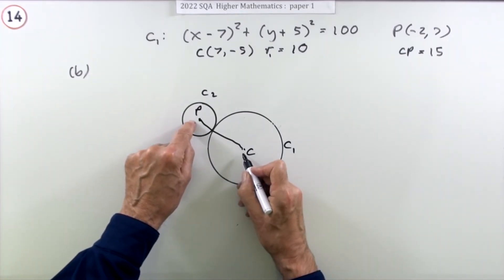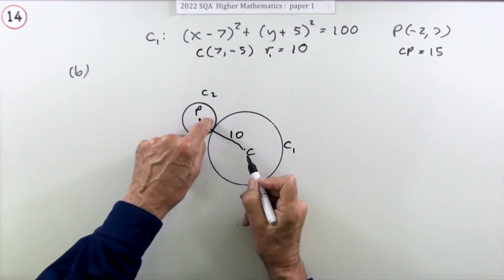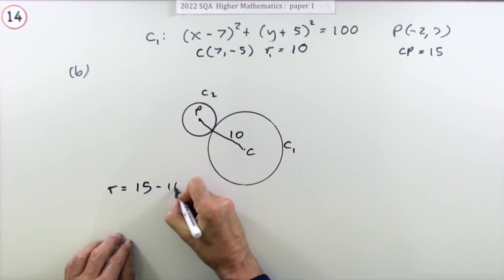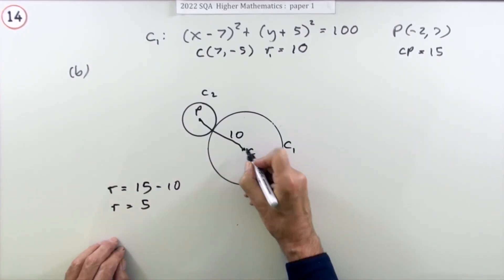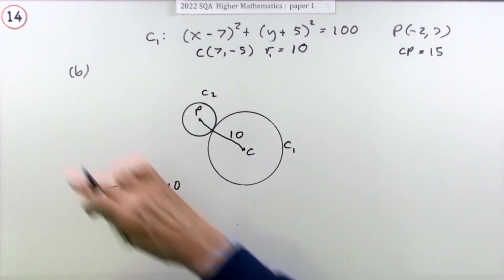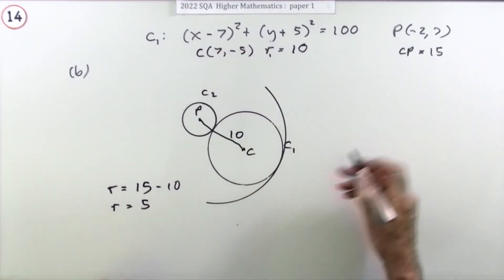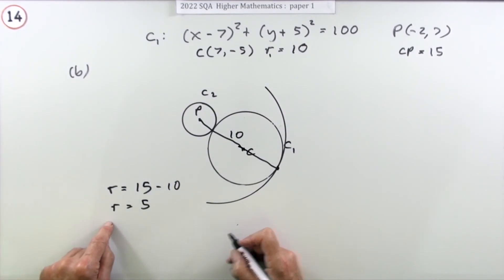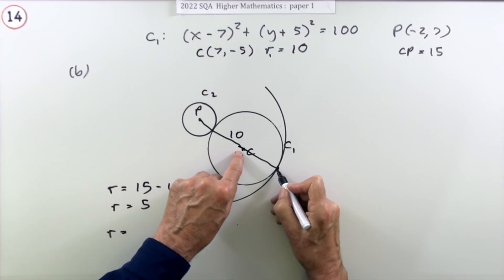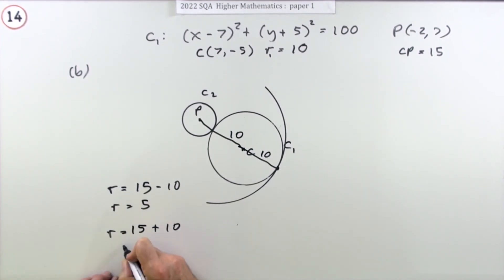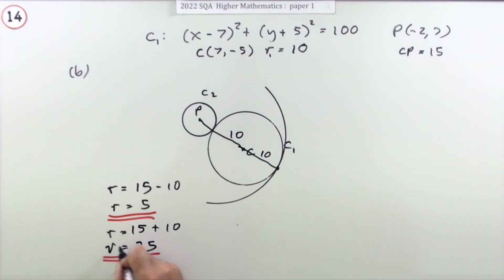You know the distance between centres is 15 and C1's radius is 10. One possible value of R is 15 minus 10, so R = 5 — the small circle just touches C1 externally from the inside. But C2 could also expand to envelop C1 entirely and touch it on the far side, in which case R = 15 + 10 = 25. So the two values are R = 5 and R = 25.